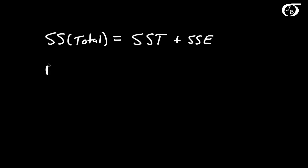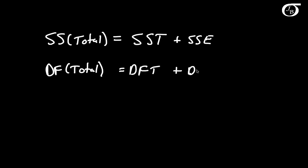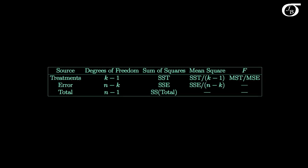This also works for the degrees of freedom as well. Our degrees of freedom total is equal to degrees of freedom for treatment plus the degrees of freedom for error. This is one of the fundamental things that is happening in analysis of variance — we are partitioning the total sum of squares into these two components. Our degrees of freedom for treatment is the number of groups minus 1. Our degrees of freedom for error is the total number of observations minus the number of groups. And our degrees of freedom total is simply n minus 1. Notice that the degrees of freedom for treatment plus the degrees of freedom for error add up to the degrees of freedom for total. Similarly, the sum of squares treatment plus the sum of squares error adds up to the sum of squares total.